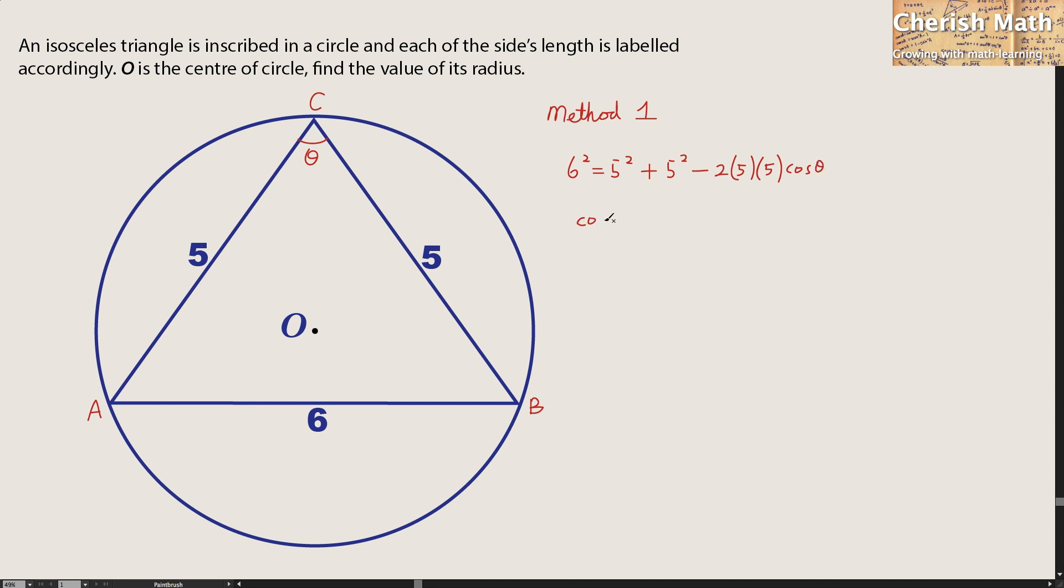And I rearrange by making cos theta as the subject. That turns 50 minus 36 divided by 50. And the value of the cos theta is the inverse of cos 7 divided by 25.